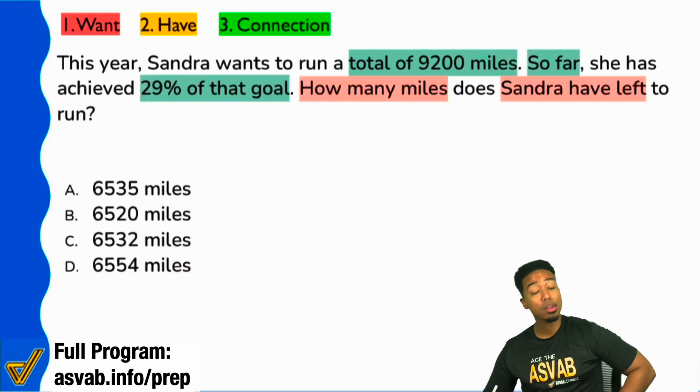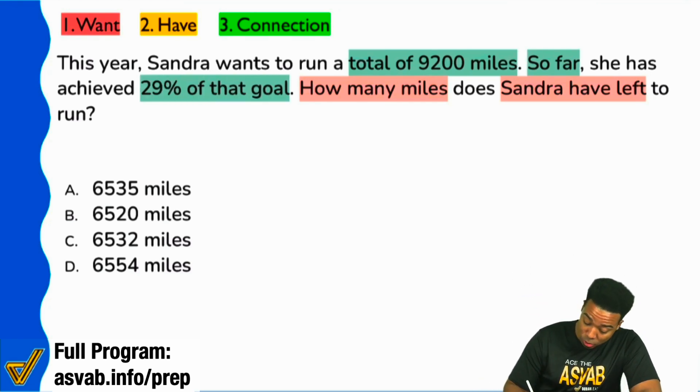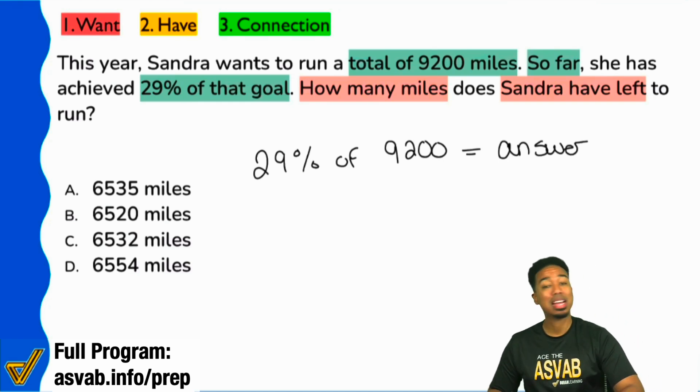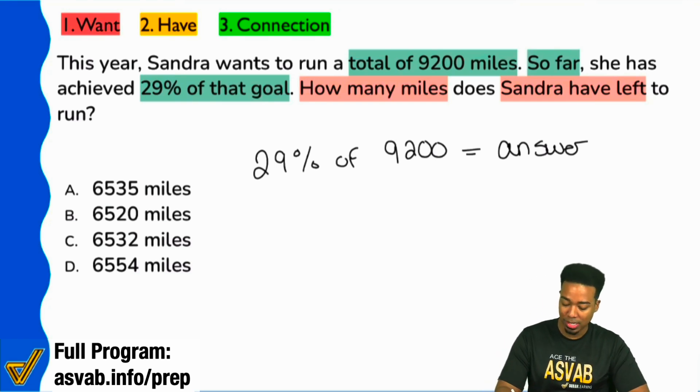we're trying to run a total of 9,200 miles and so far we have 29%. Well, guess what I'm going to do, I'm going to go ahead and say 29% of the 9,200 is going to equal my answer. However, that's not going to get you the answer because 29%, what does the 29% represent?